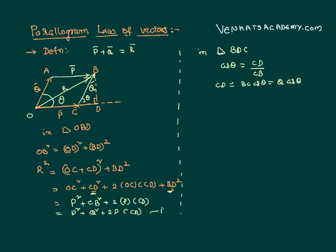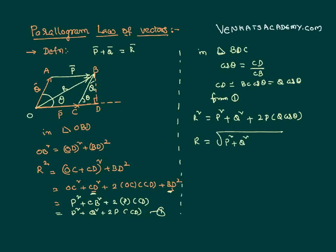Substituting CD = Q·cos theta into the equation, I get: R² = P² + Q² + 2P·Q·cos theta. Therefore, R equals the square root of P² + Q² + 2PQ·cos theta. This is how we find the resultant magnitude of two vectors using the parallelogram law. Note that this gives only the magnitude; we are not yet addressing direction.